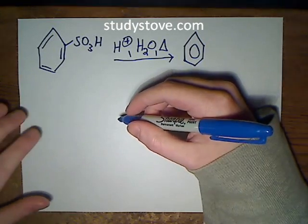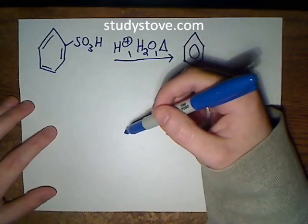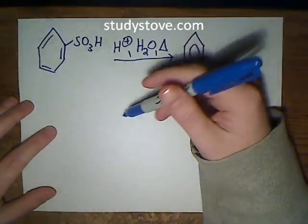In this video I'm going to go over the mechanism for the desulfonation of benzene sulfonic acid. That's done by adding a catalytic amount of acid in water and heating the mixture.